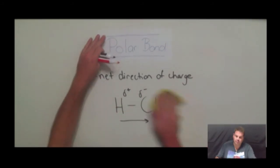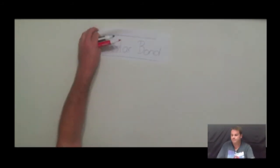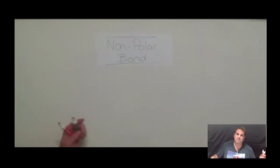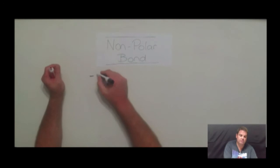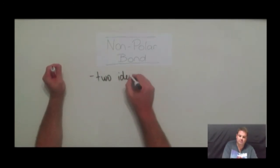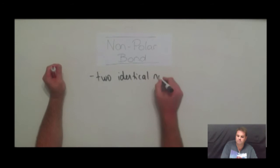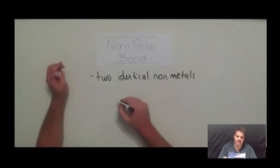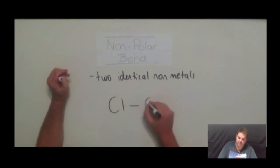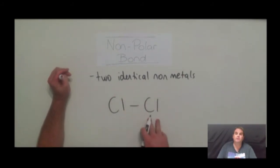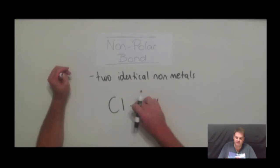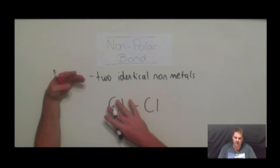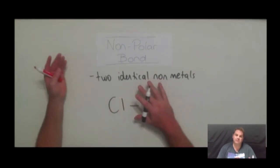A non-polar bond does not have a net direction of charge. A non-polar bond is generally between two identical non-metal atoms. If we go chlorine to chlorine, both chlorines have 17 protons in their nucleus, and the two electrons in the middle are shared evenly. So there's no net direction of charge — that's what we call a non-polar bond.